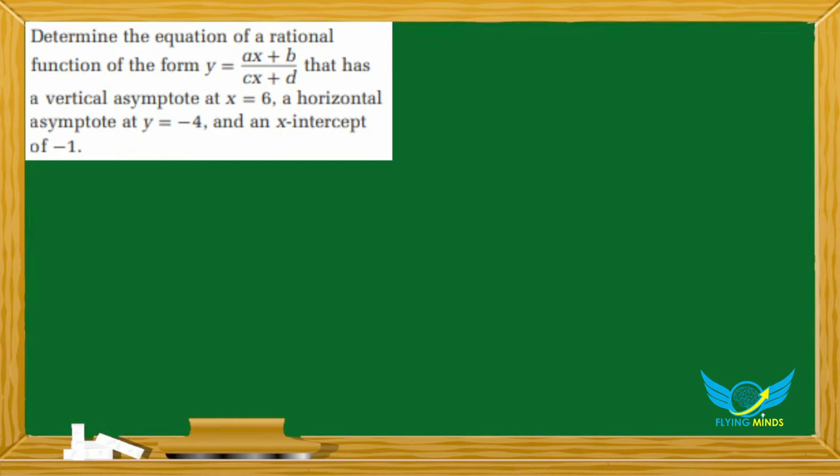The question is: determine the equation of a rational function of the form y equals ax plus b over cx plus d that has a vertical asymptote at x equals 6, a horizontal asymptote at y equals negative 4, and an x-intercept of negative 1.